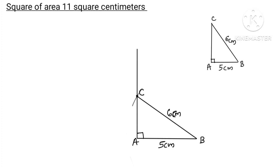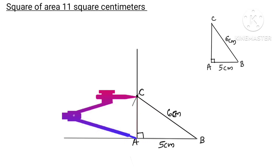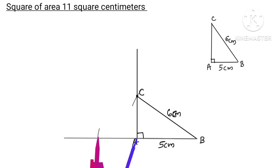Now complete the right angle triangle for the 11 square. We extend AB and make the compass length equal to AC. We draw the arc, mark the point, then draw a perpendicular using a set square at 90 degrees angle. We now have the two perpendicular points for the square.